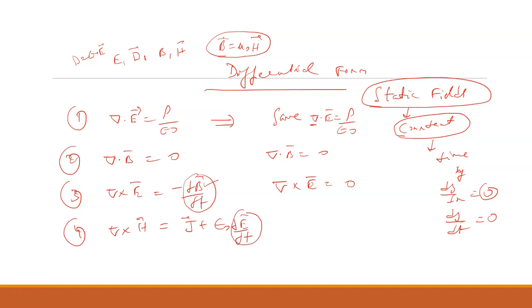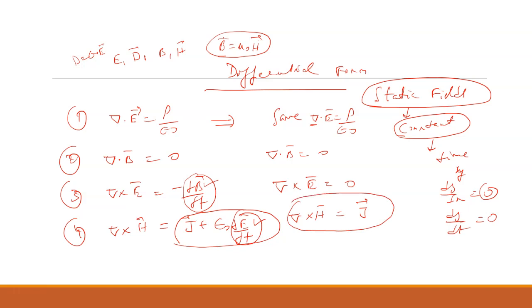For the fourth Maxwell equation, E is varying with respect to time. If the field is constant, that term drops out and we get del cross H equals J — the Ampere's circuital law in differential form. So in static fields, dB by dt and dE by dt both become zero, giving us the four static Maxwell equations.